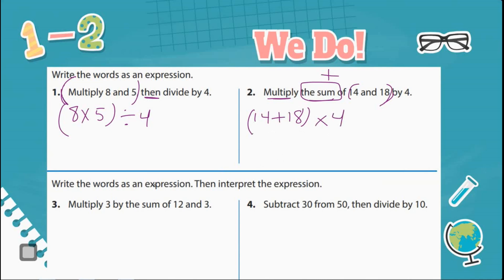Number 3 says write the words as an expression, then interpret the expression. Multiply 3 by the sum of 12 and 3. So if I see sum, what are you going to do? 12 plus 3. Multiply by 3. You can either have the 3 in the front or the back. It doesn't matter. But it's telling me to add 12 plus 3 first. And then I'm going to multiply its sum by 3.